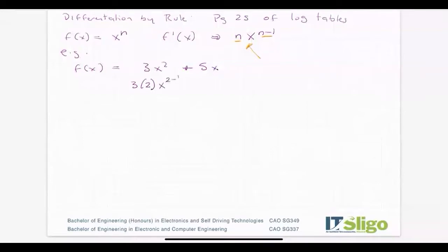We don't normally write x to the power of 1. For 5x, the 5 stays, take down the n which is 1, giving x^(1-1). Five times one is 5, and x to the power of zero is 1.